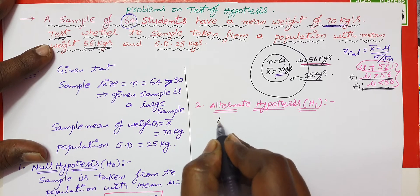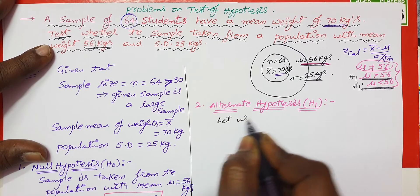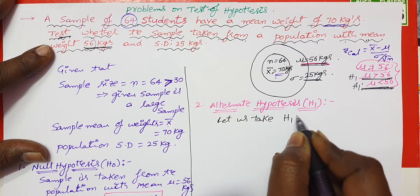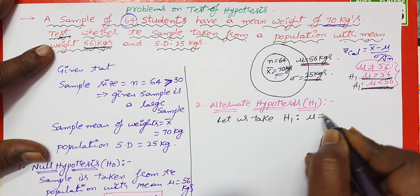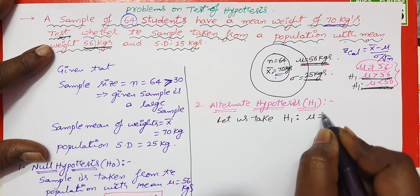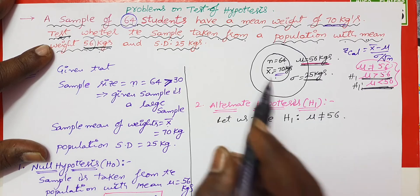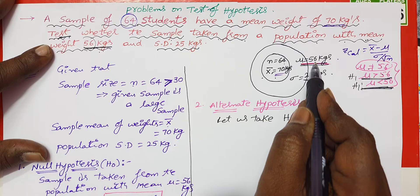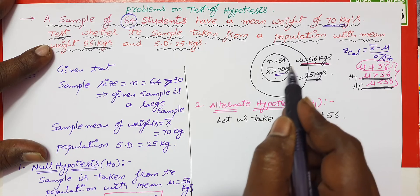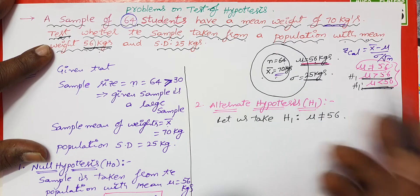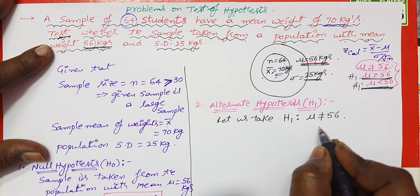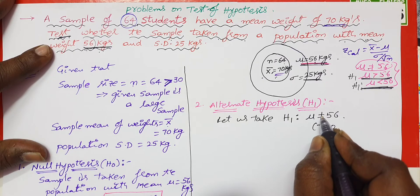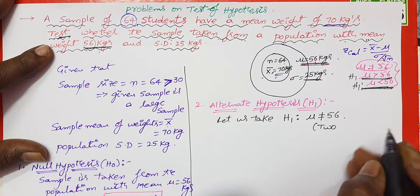So let us take H1 as mu is not equal to 56. That means the population mean is not equal to 56. Since H1 uses 'not equal to', this is a 2-tailed test. If H1 were less than or greater than, it would be a 1-tailed test.